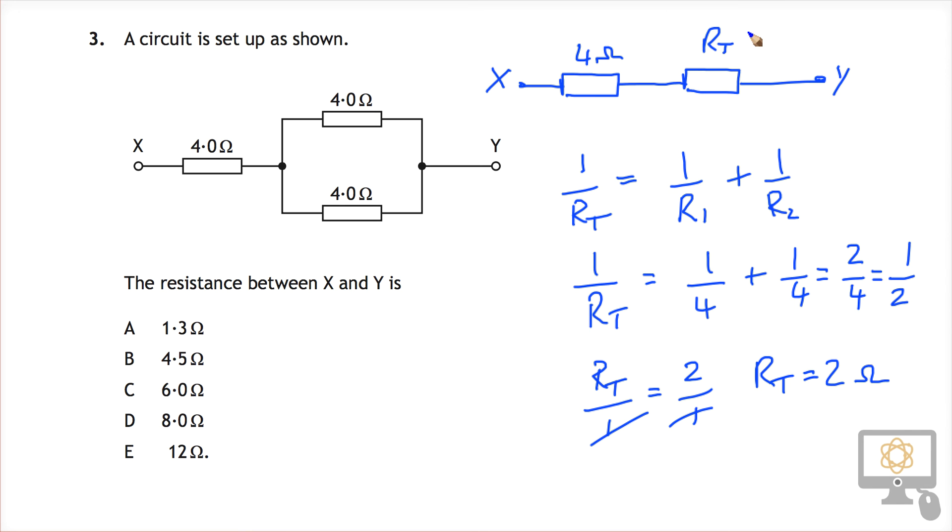And so now we've got in series a 2-ohm resistor and a 4-ohm resistor, and so our total resistance is 6 ohms, and so the answer has to be C. Now I did say that there was another alternative way of thinking about this.